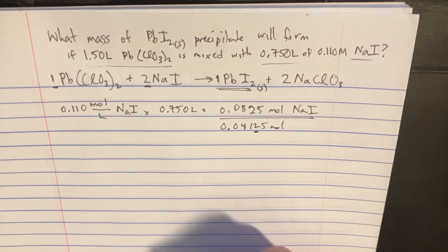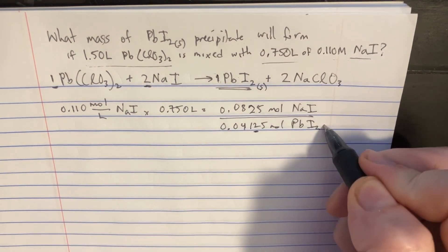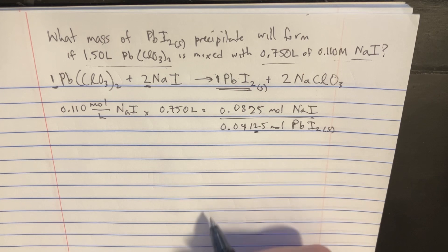Keeping in mind, this should probably just be three sig figs. But that's how many moles of the PbI₂ that we have in the final precipitate.